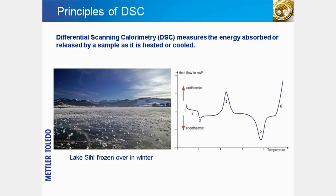Differential scanning calorimetry measures the heat flow produced in a sample when it is heated, cooled, or held isothermally at constant temperature. A sample may undergo one or more phase changes during heating or cooling. A good example of a phase change is the melting of ice. The picture on the left is a winter view of Lake Seale in Switzerland, where the surface of the lake often freezes over due to sub-zero temperatures.